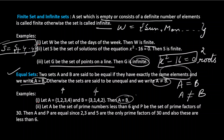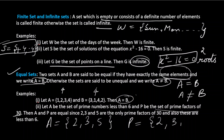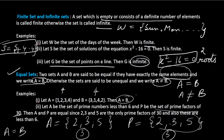Next example: let A be the set of prime numbers less than 6, so A = {2, 3, 5}. Let P be the set of prime factors of 30, which are also 2, 3, and 5. Both sets have 3 elements and the same elements, so A = P. These are the three types of sets discussed: empty set, finite and infinite set, and equal sets.